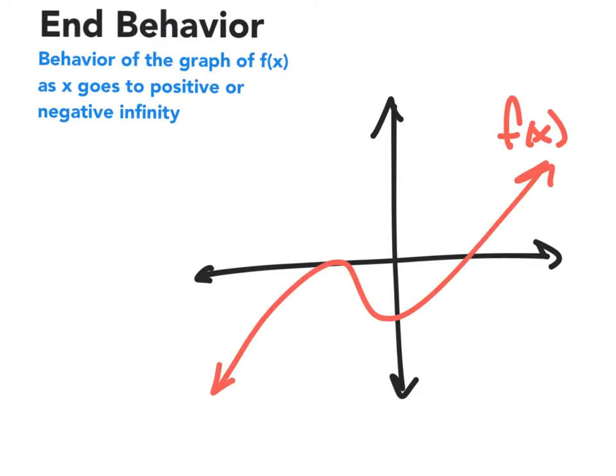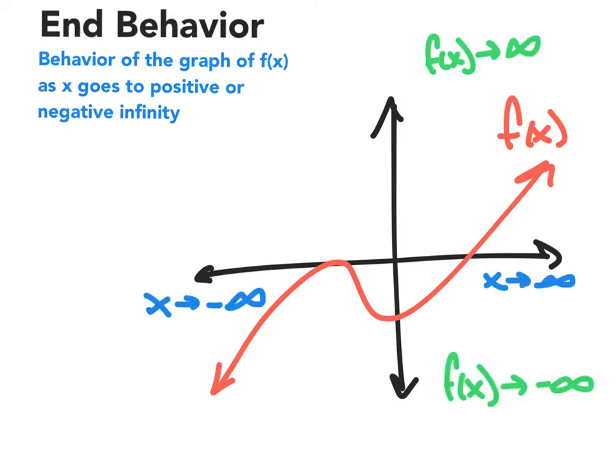So here we have a graph of f(x) and we're interested in a couple of things. We're interested in looking at this graph as x goes to infinity, what is f(x) doing? Is it going up to infinity or is f(x) going down to negative infinity? Another way to think about this is as the domain increases to the right, what's the range doing? As the domain goes left, what's the range doing?